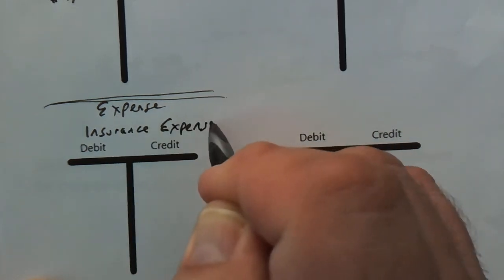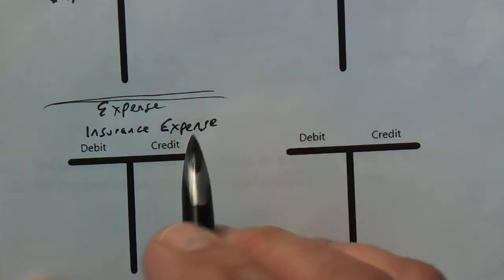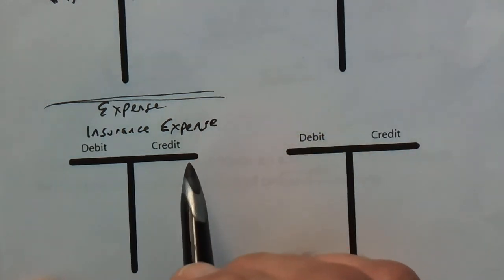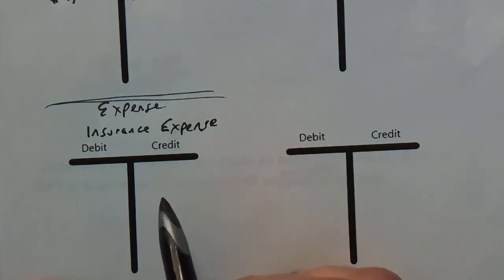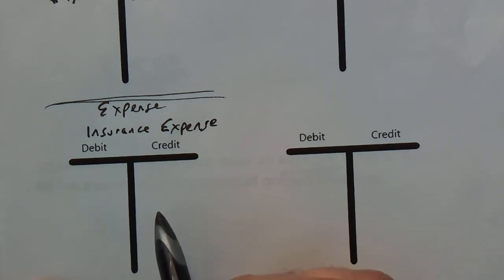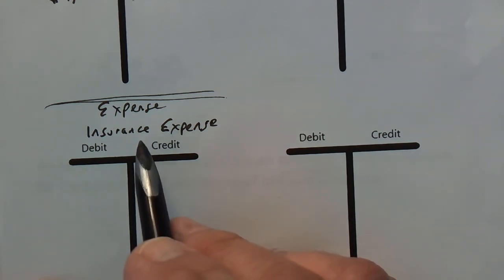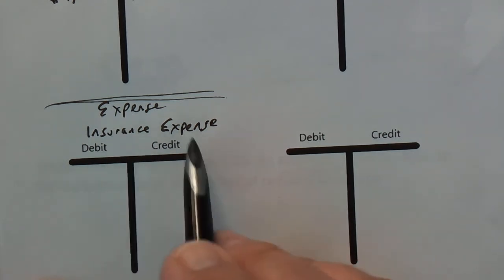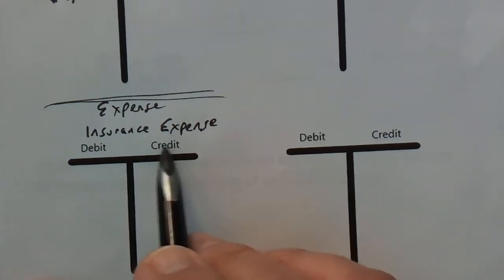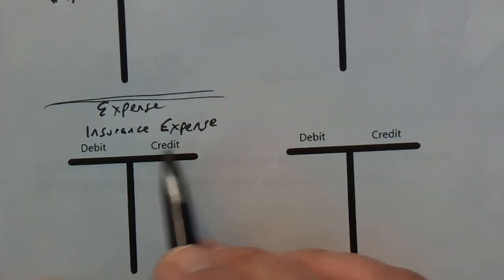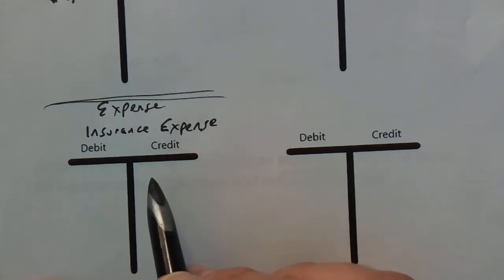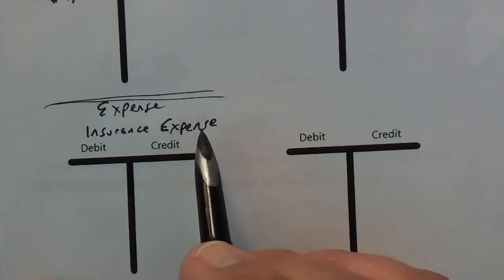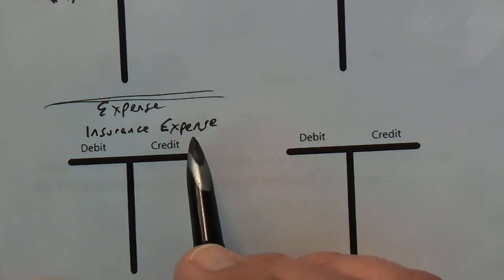Now, corporations may have different types of insurance — auto insurance, liability insurance, workers' comp insurance — so there may be different kinds and subcategories under insurance expense. You could have an account for each one of those. I'm just going to call it insurance expense — it's going to work the same.